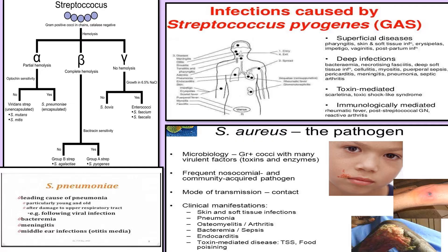Streptococcus pneumoniae is an alpha-hemolytic streptococcus that causes meningitis and pneumonia in middle-aged and elderly patients. It is also the most common bacteria causing sinusitis and middle ear infections in children. Streptococcus mutans causes caries. Streptococcus pyogenes has virulence factors including M protein, streptokinase, erythrogenic toxin, and streptolysin, causing pharyngitis, cellulitis, impetigo, scarlet fever, and rheumatic fever.